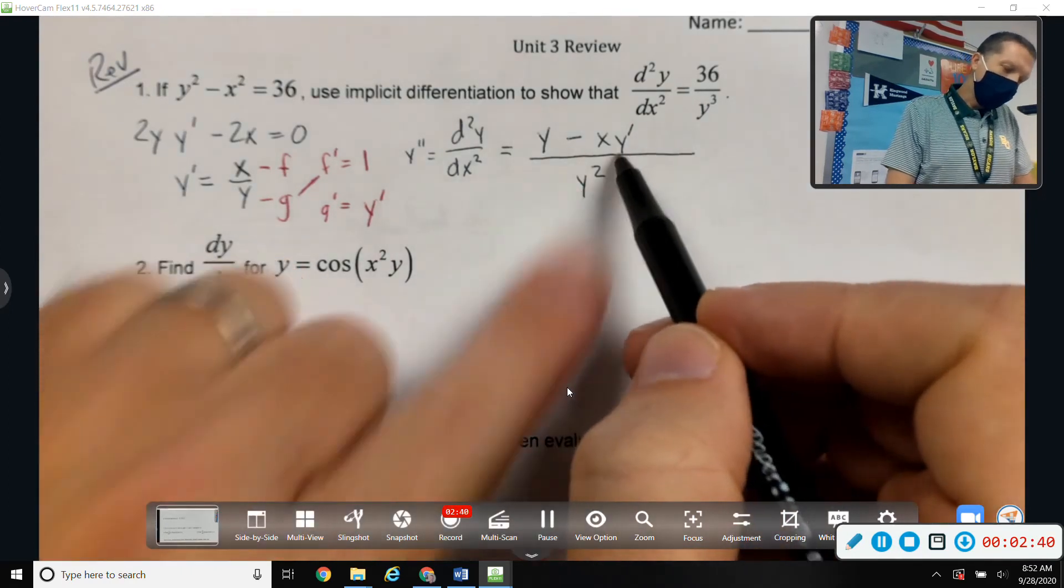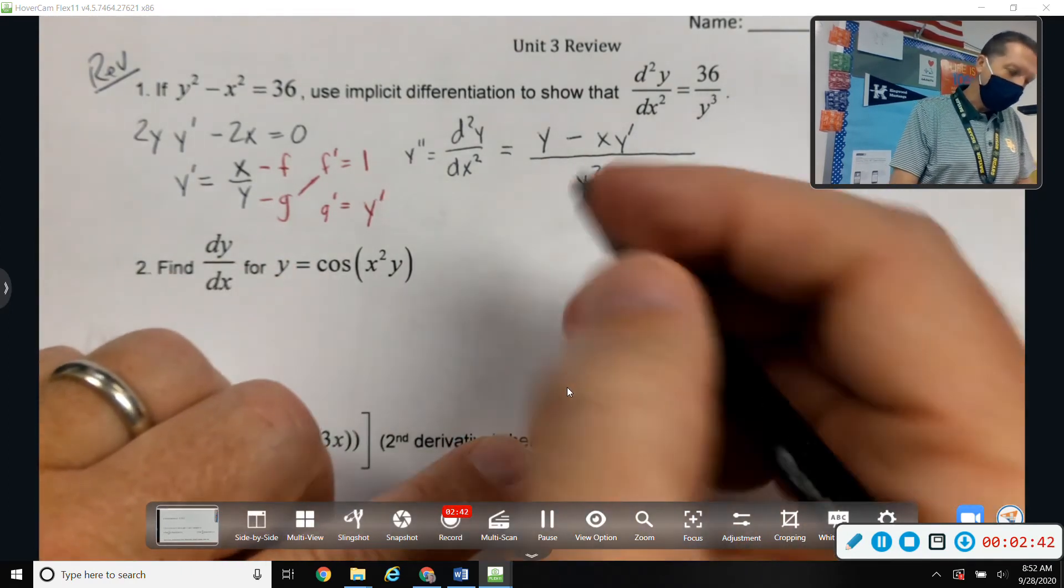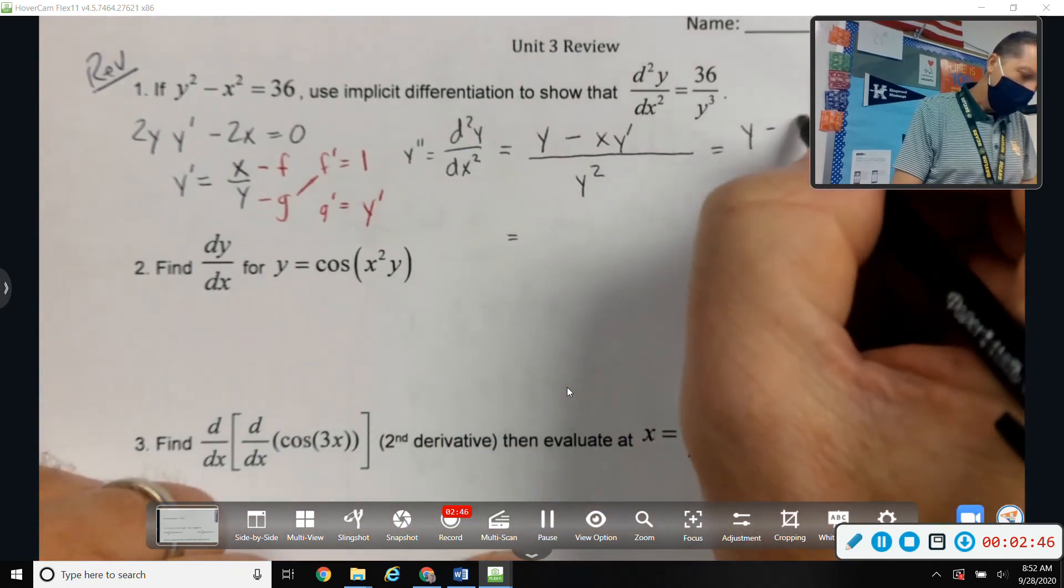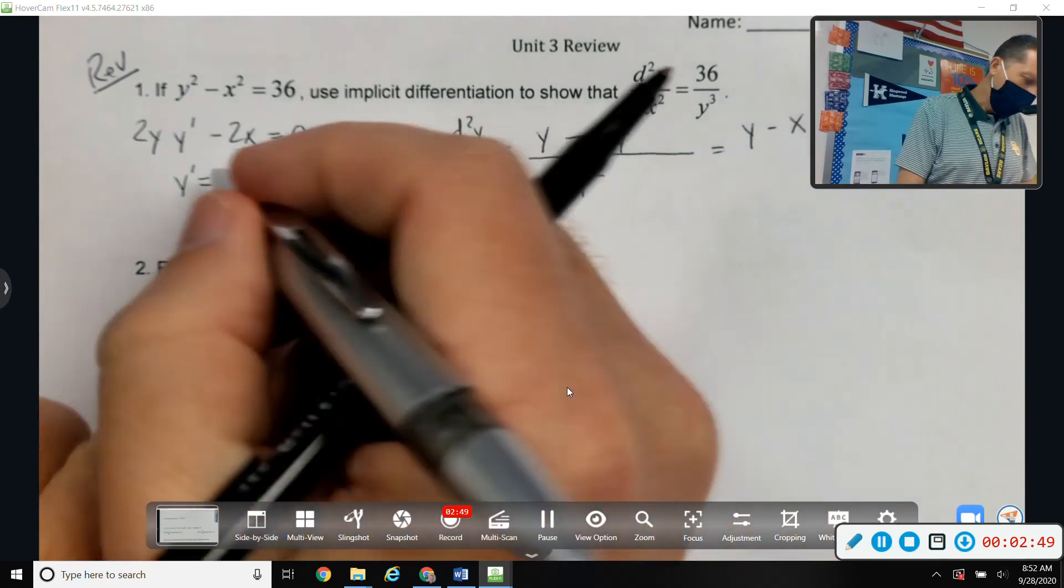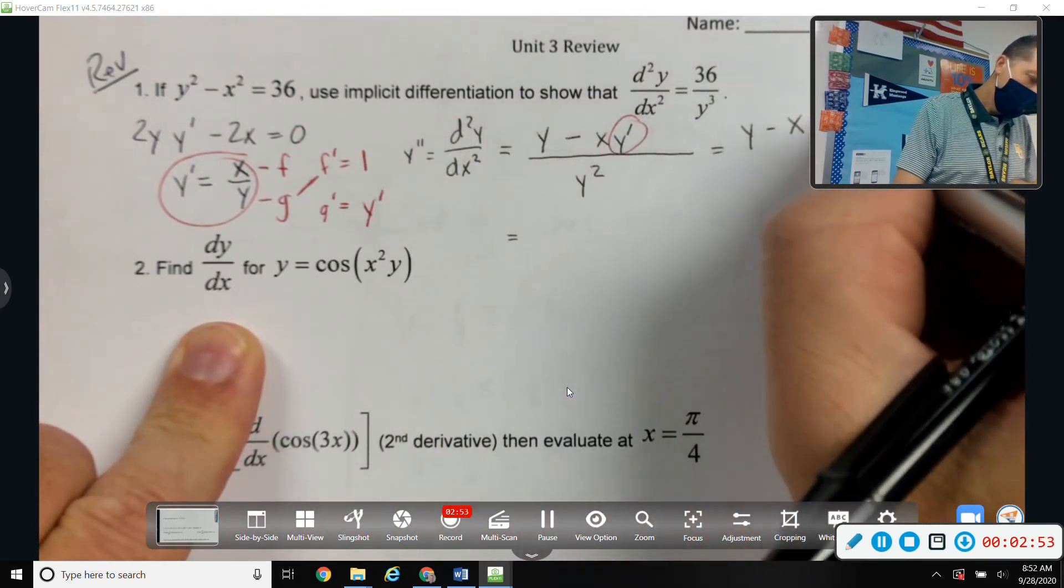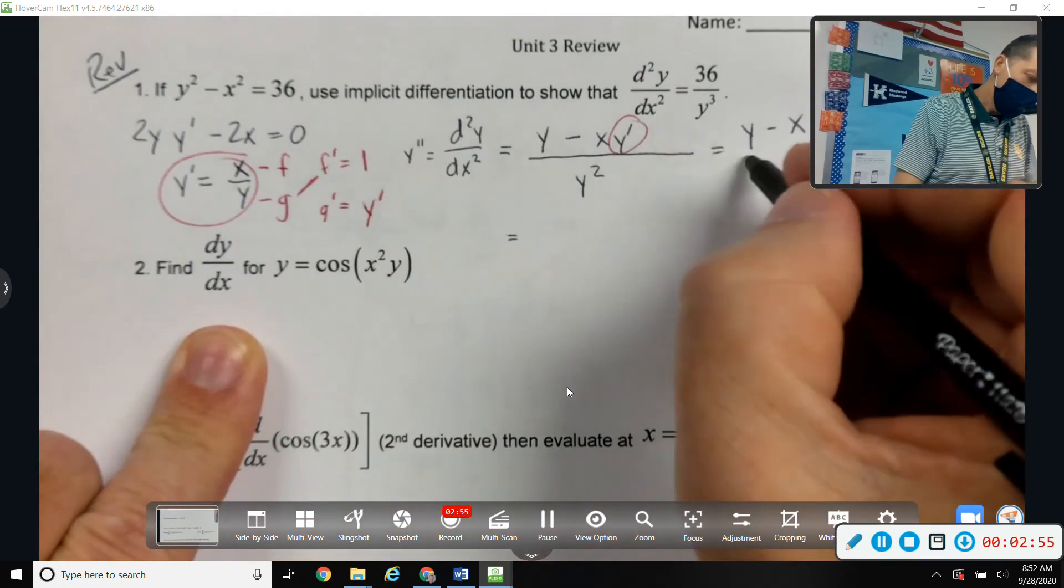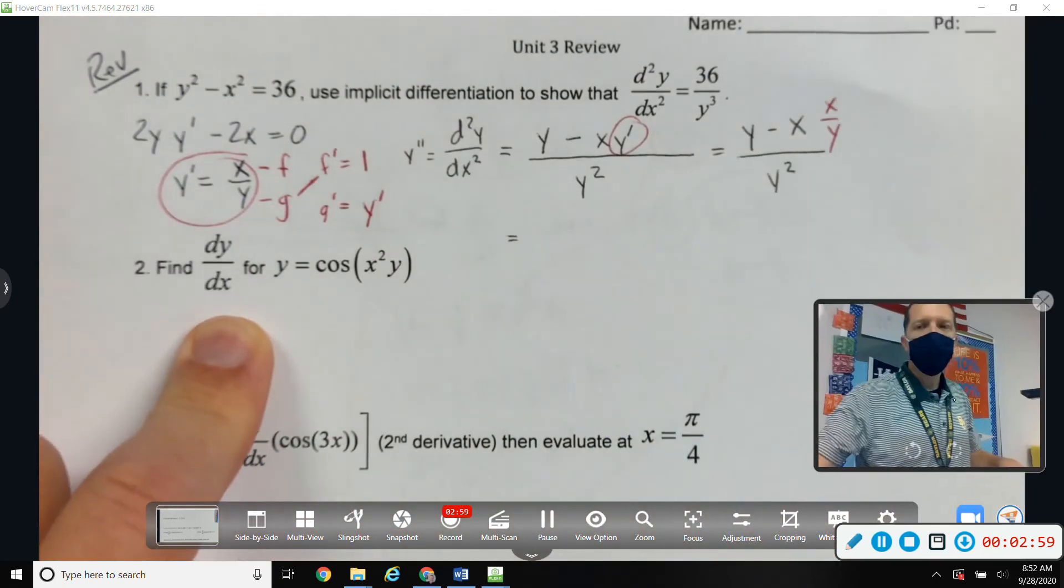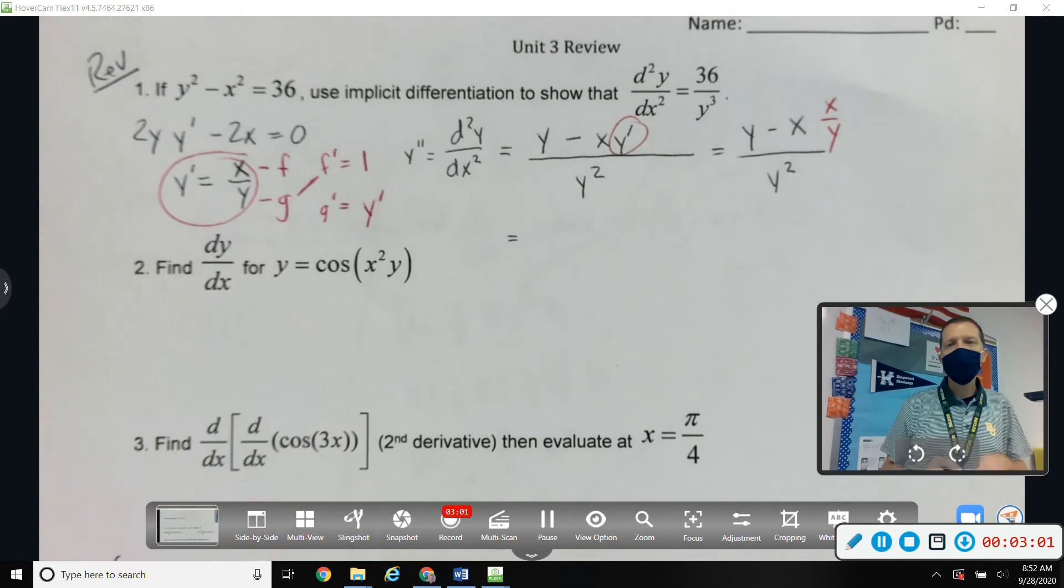Let's get rid of the y', because I don't have a y' in my answer. So let's... y - x times... y' we found back here was x/y. So we'll plug in the... plug in y'.